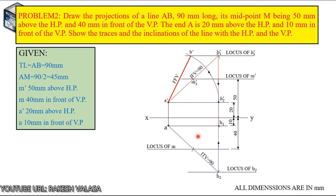Similarly, take the engineering compass and measure AB1 as radius — this AB1 radius means the length of top view. Draw the arc from B1 to the locus of B2. This name is B. AB is the final top view. Now see the question: show the traces and the inclination of the line with HP and VP.